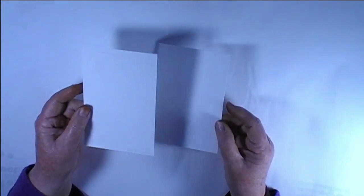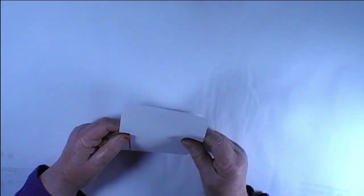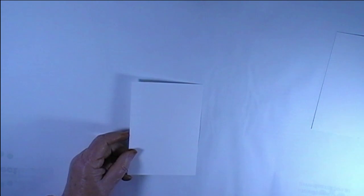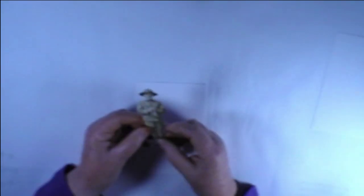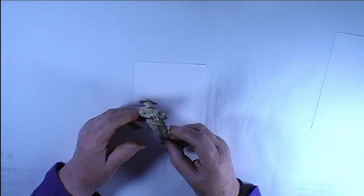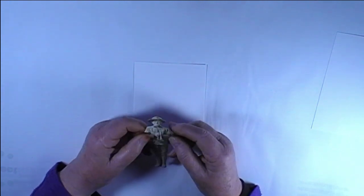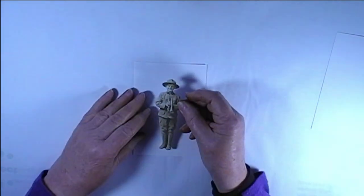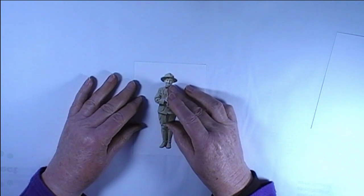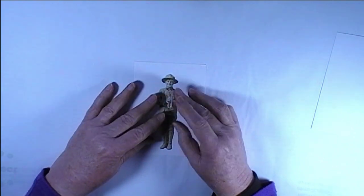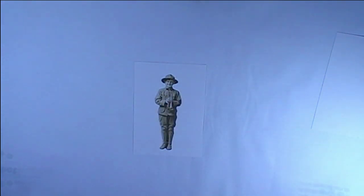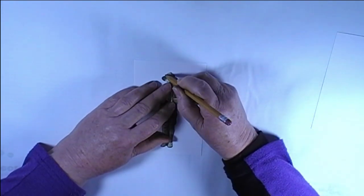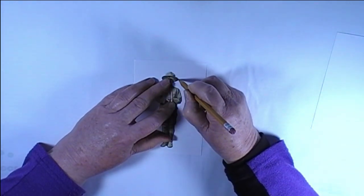I'm going to need two pieces of card about the same size and an image for the middle. It can be a person, it could be a heart, it could be an angel, whatever you want it to be. I'm going to use this little boy. Place him down in the middle approximately and then just trace around the outside with a pencil.